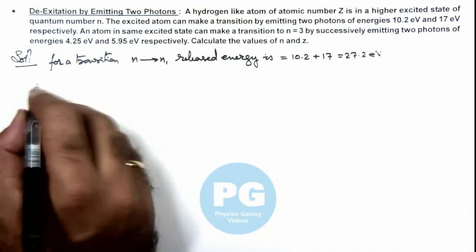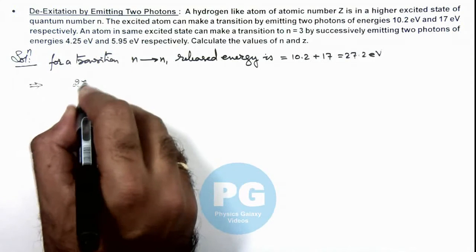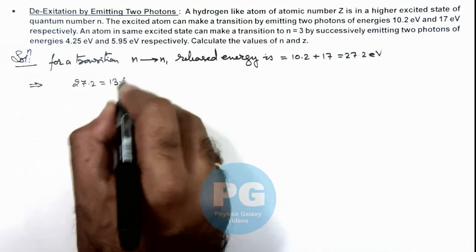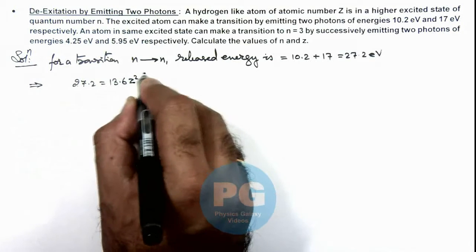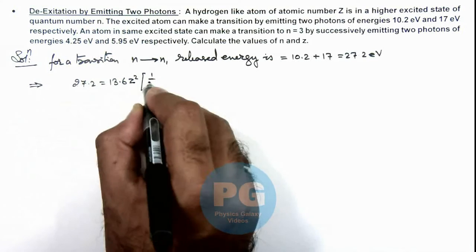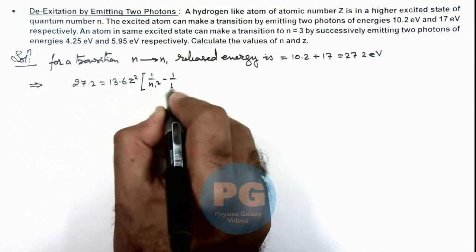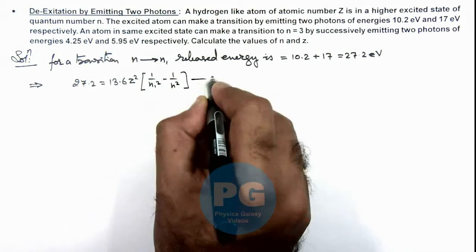This implies here we can write 27.2 is equal to 13.6 z square multiplied by 1 by n1 square minus 1 by n square, say this is equation 1.